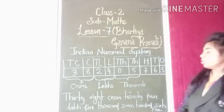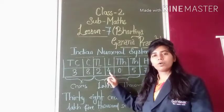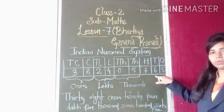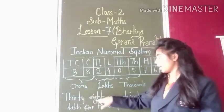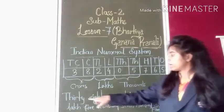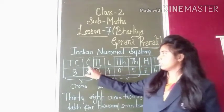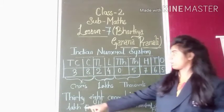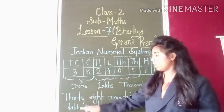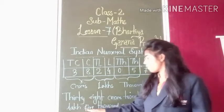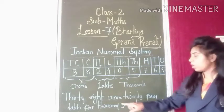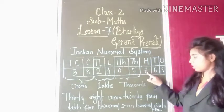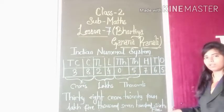So how can we write this number in English? It would be: thirty-eight crore, twenty-four lakhs, five thousand seven hundred sixty-five.